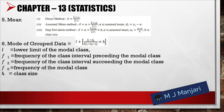For grouped data, the mean can be found by: Direct method: mean = Σ(fᵢxᵢ) / Σfᵢ. Assumed mean method: mean = A + Σ(fᵢdᵢ)/Σfᵢ, where A is the assumed mean and dᵢ = xᵢ − A. Step deviation method uses uᵢ = (xᵢ − A)/h, where h is class size. Mode of grouped data = L + [(f₁ − f₀)/(2f₁ − f₀ − f₂)] × h, where L is the lower limit of the modal class, f₁ is the frequency of the modal class, f₀ is the frequency of the preceding class, f₂ is the frequency of the succeeding class, and h is the class size.